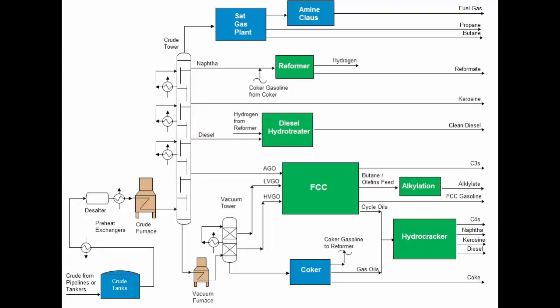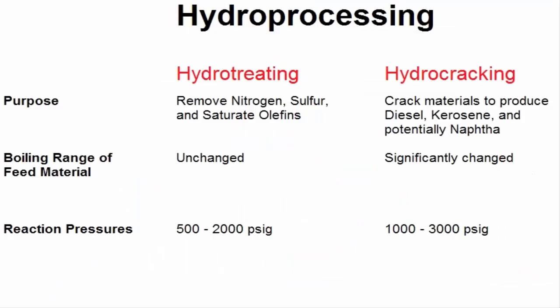Hydro-processing is a common refinery unit operation consisting of two extremes: hydro-treating and hydro-cracking. The difference is that hydro-cracking is a more severe operation because it cracks the feed material into smaller molecules. On the other hand, hydro-treating simply seeks to remove objectionable materials like sulfur without changing the boiling point of the feed material.